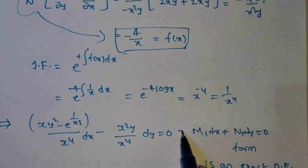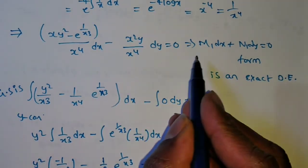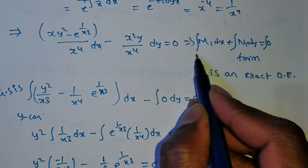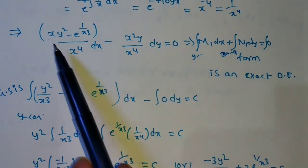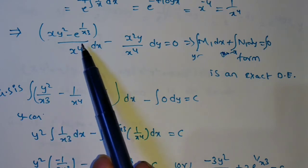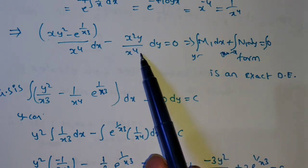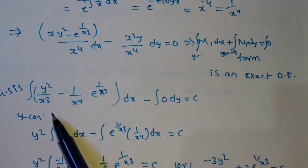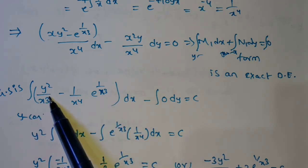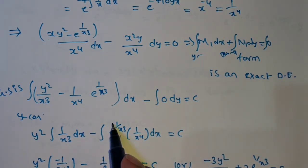Multiplying by 1/x⁴ gives a new equation M₁ dx + N₁ dy = 0, which is an exact differential equation. The general solution is integral of M₁ dx (treating y as constant) plus integral of terms in N₁ with no x, equals c. Simplifying: M₁ gives y²/x³, and for the exponential term e^(1/x³), there are no x-free terms in N₁, so that integral is 0.